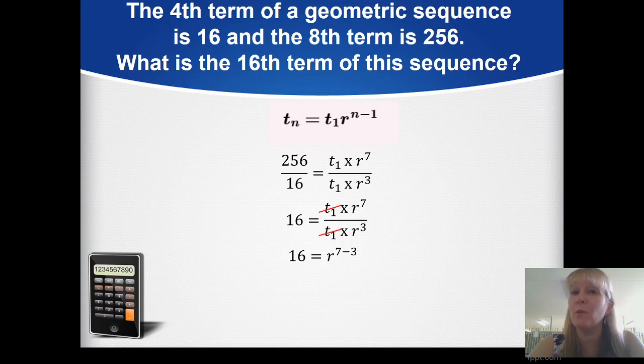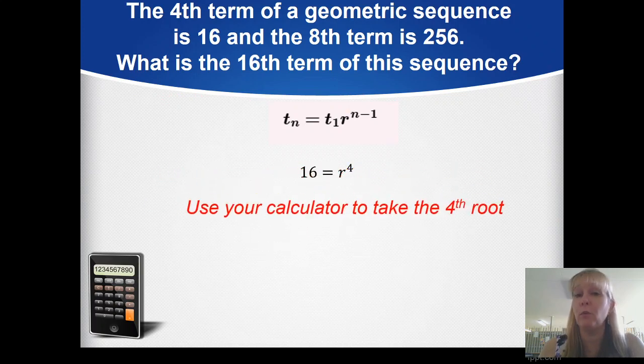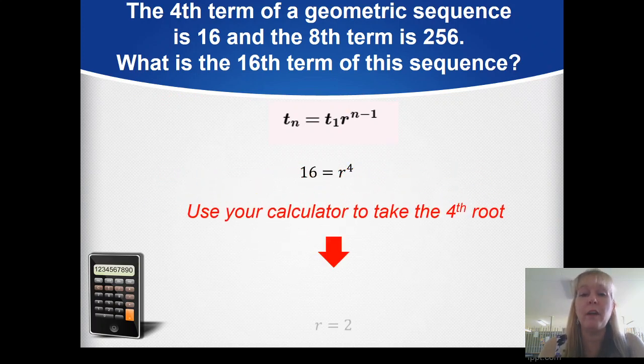You'll notice I've jumped to r^(7-3). Recall the index laws from grade 9: when dividing with the same base, subtract the indices. So r⁷ divided by r³ becomes r^(7-3) equals r⁴. Now 16 equals r⁴, so taking the fourth root gives r equals 2. We've found the common ratio—we're halfway there.